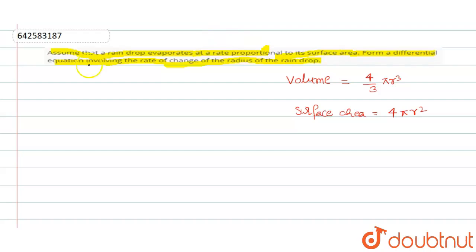A spherical raindrop evaporates at a rate dV/dt directly proportional to S. That is, dV/dt equals -kS, where -k represents the decrease in volume due to evaporation.